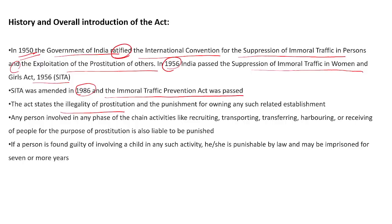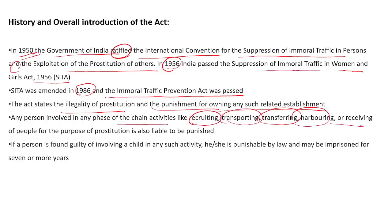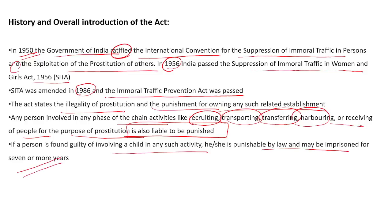This Act established the illegality of prostitution and punishment for owning such related establishments. Any person involved in recruiting, transporting, transferring, harboring, or receiving people for the purpose of prostitution was liable to be punished under this Act. If anyone is found guilty of involving a child in such activity, they shall be imprisoned for seven years or more.